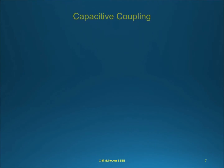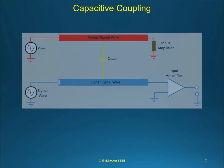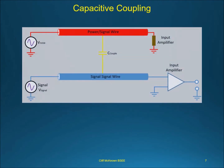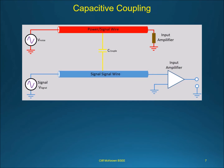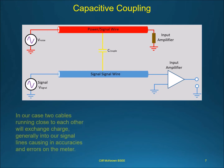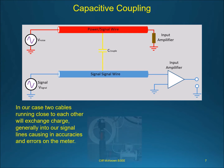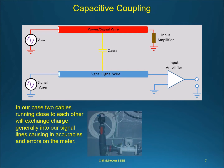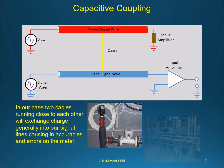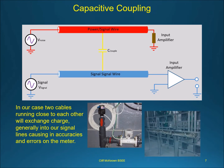In our case, two cables running close to each other will exchange charge, generally into our signal lines, causing inaccuracies and errors on the meter. Coiling cable is essentially creating an ideal coupling — both capacitive and inductive — which results in inaccurate readings and false errors.